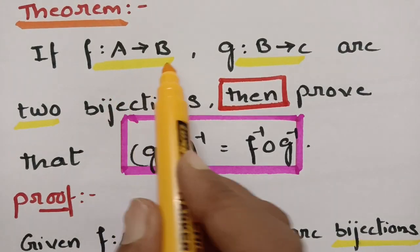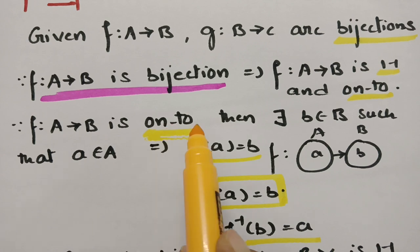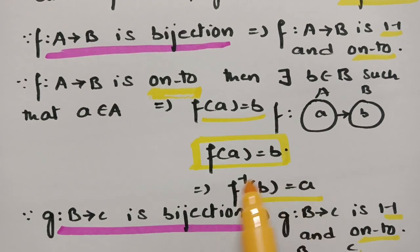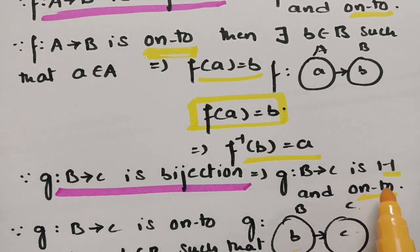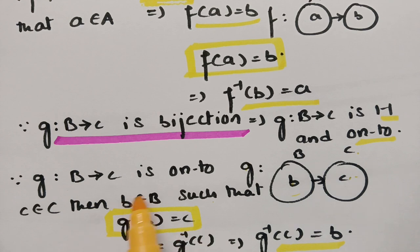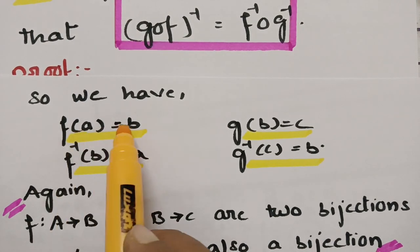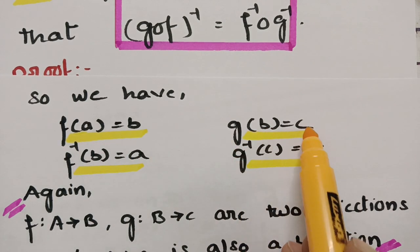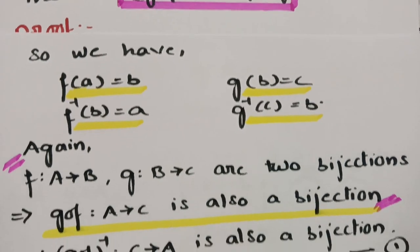So from the bijection properties, we have established: F of a equals b and F inverse of b equals a; G of b equals c and G inverse of c equals b. These four equations are derived using the onto property from each bijection.